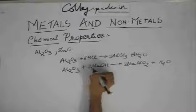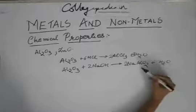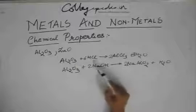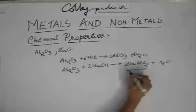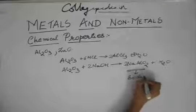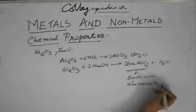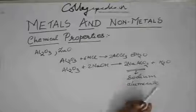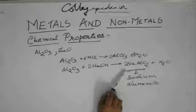Al₂O₃ reacts with NaOH to give NaAlO₂ plus H₂O. The equation is balanced. This compound is known as sodium aluminate, and it is a salt. So Al₂O₃ on reaction with NaOH gives a salt and water.